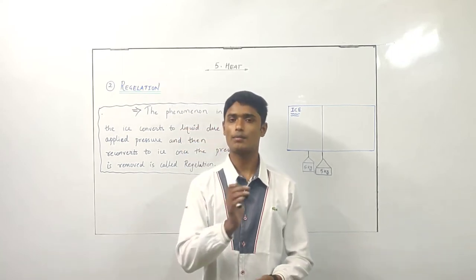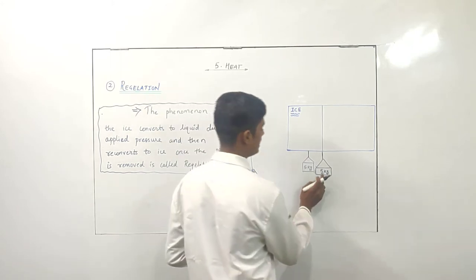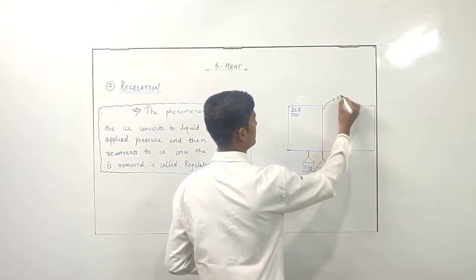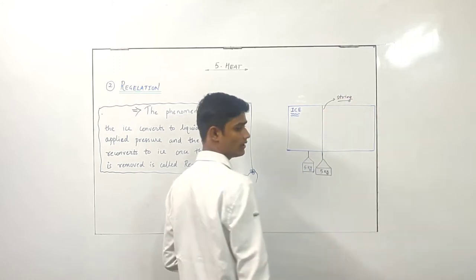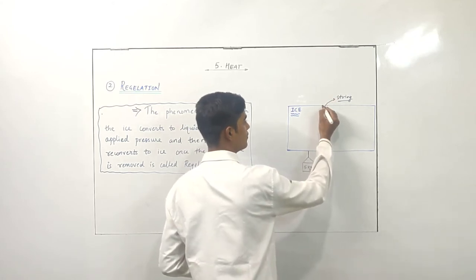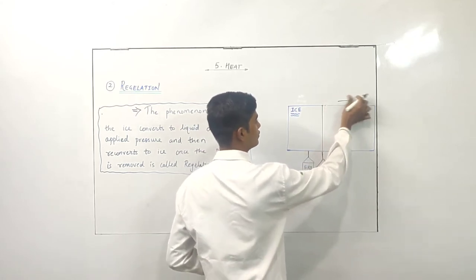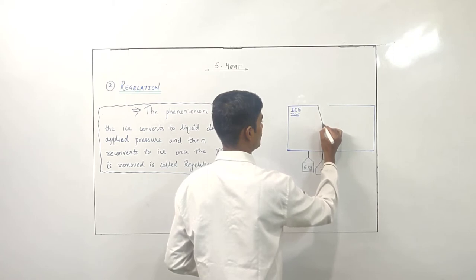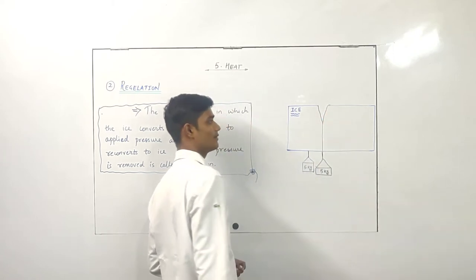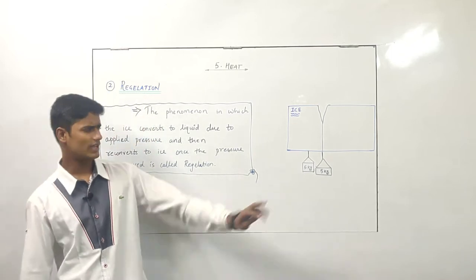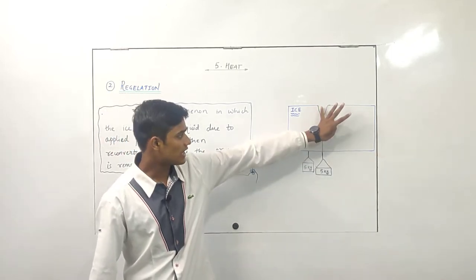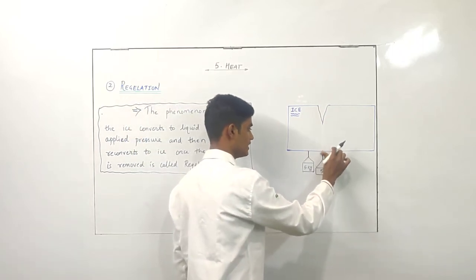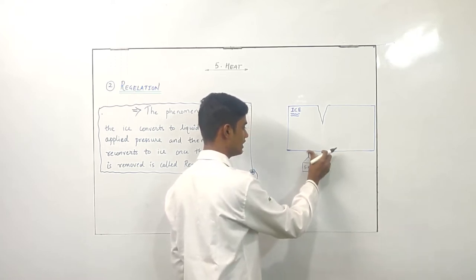Now just imagine: I have hung a weight here. This is nothing but a string. This string will apply pressure on top of the ice. As soon as it applies pressure, something like a curvature forms in the ice. As basic as that — due to the pressure, the string will cut through. Now I remove the pressure and let's see what happens.